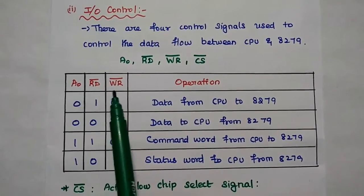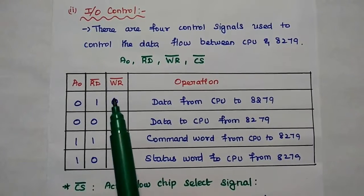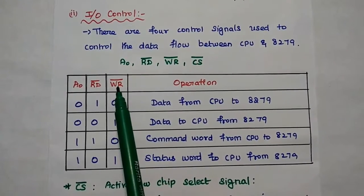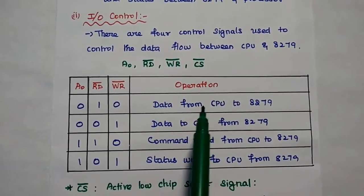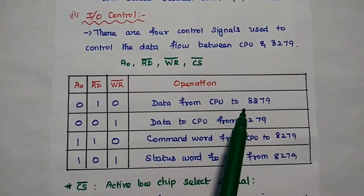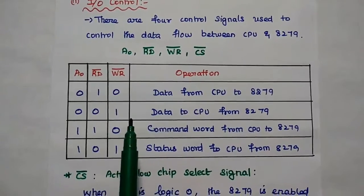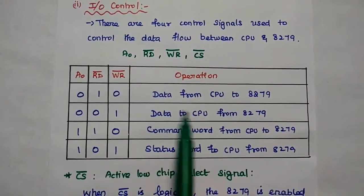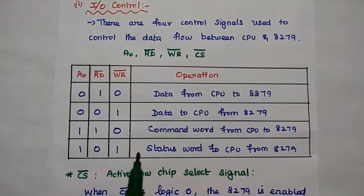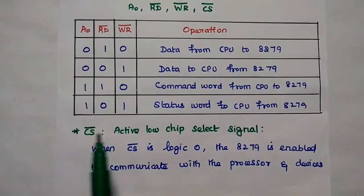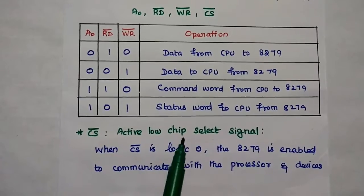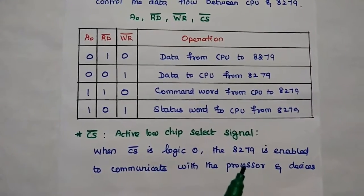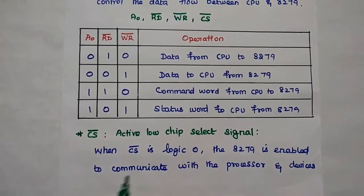The read bar and write bar are both active low signals — active low means whenever they are low, they are activated. When write bar is 0, data from the CPU can be written to 8279. When read bar is 0, the read signal is activated, meaning the CPU can read the data from 8279. The CS bar is an active low chip select signal — whenever the signal is logic 0, the 8279 is enabled to communicate with the processor and the devices.